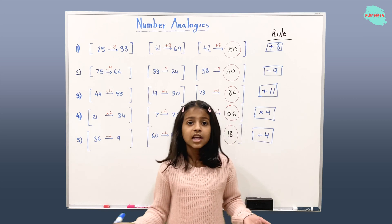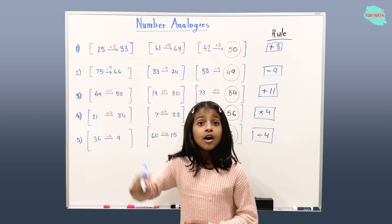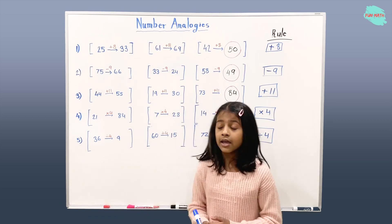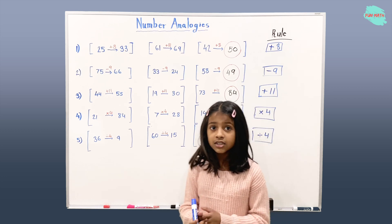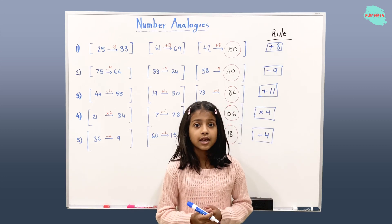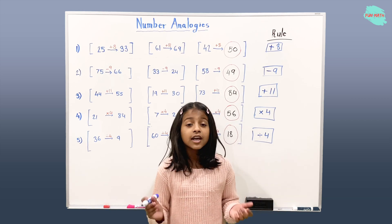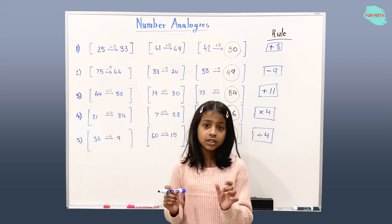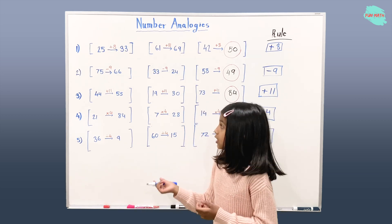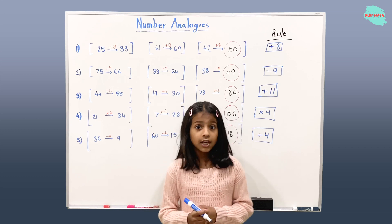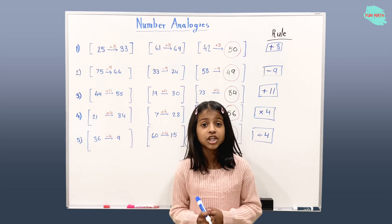All right, let's review what we learned today. We learned about number analogies — we had five different examples, and in these five examples we had three different groups. One last thing that's very important: what is analogies? Analogies is a similarity between things or numbers. We used number analogies in this video. I hope you learned something from this video. Thanks for watching. Bye!